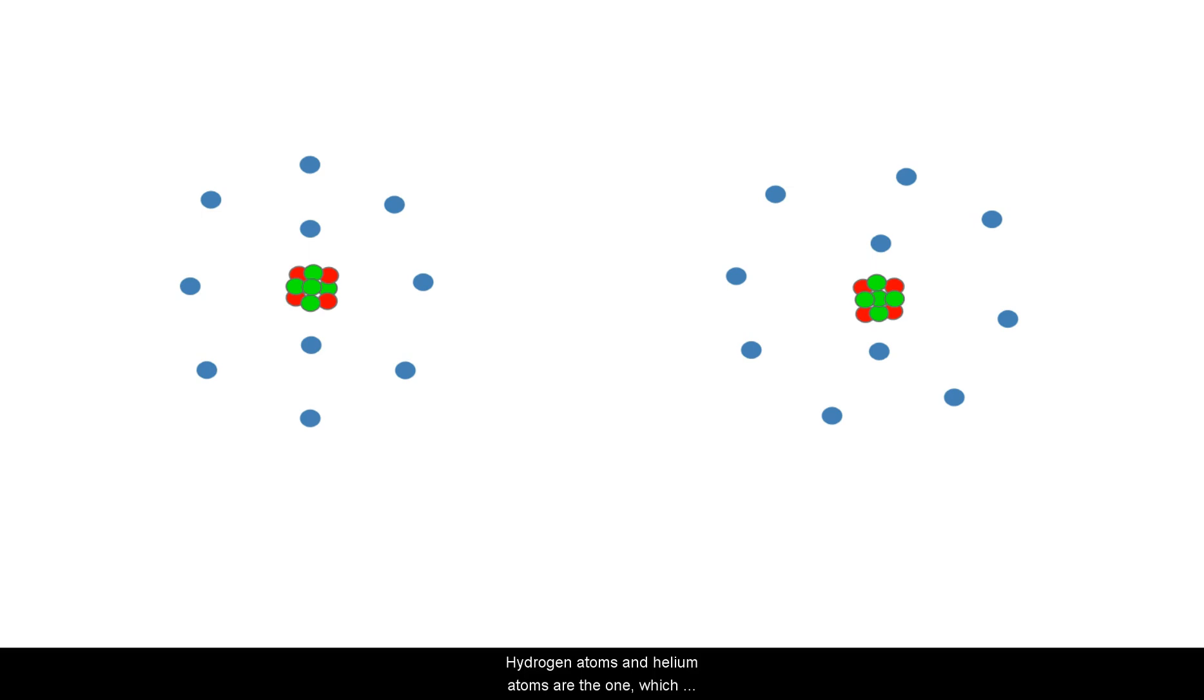Hydrogen atoms and helium atoms are the one which formed at the initial stage of universe. And even now, major part of the universe is composed of hydrogen and helium molecules.